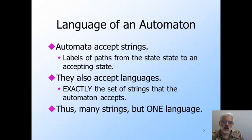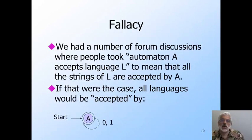Thus, while the typical automaton accepts an infinite number of different strings, it accepts exactly one language, the set of strings that it accepts. Let's remember that the phrase automaton A accepts language L means that L is the one language of A. A accepts all the strings in L, and A does not accept any other strings.